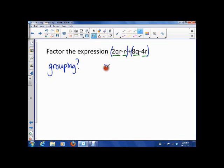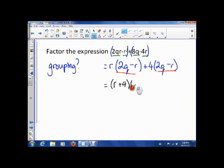So let's try, so out of here I can take an r and be left with 2q minus an r, and out of here I can take a 4 and be left with 2q minus an r. So see how we're left with common factors there? So that now gives us r plus 4, 2q minus r. And that's it. Let's go to another one.